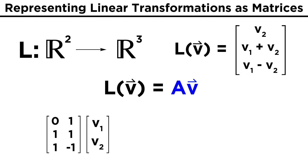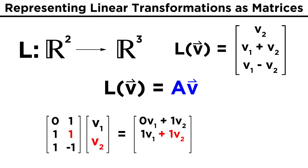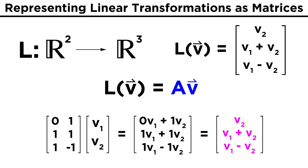A times V gives us the matrix [[0,1],[1,1],[1,−1]] times (V1, V2). Going through the matrix multiplication, we get (0·V1 + 1·V2, 1·V1 + 1·V2, 1·V1 − 1·V2). Simplifying, we get (V2, V1+V2, V1−V2), which is exactly the form of the linear transformation we started with.